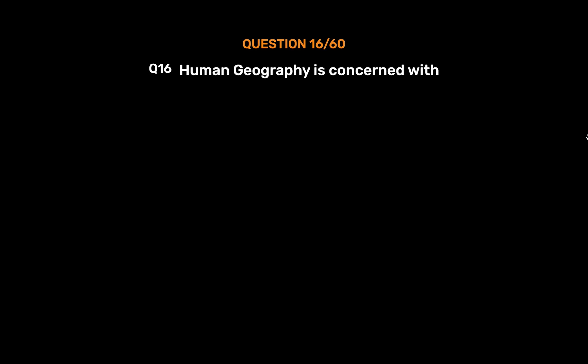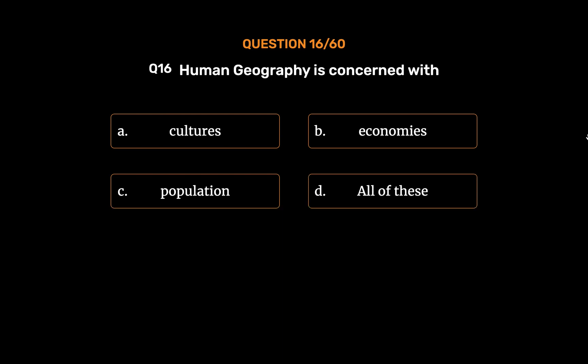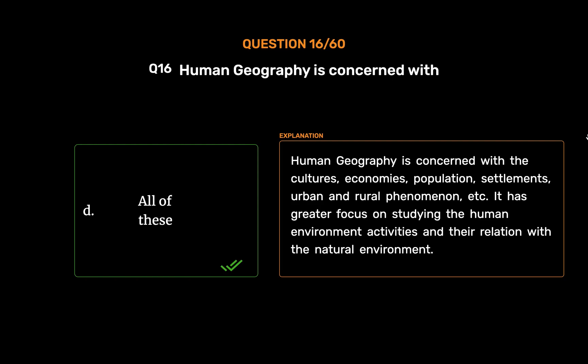Question number 16: Human geography is concerned with — option A: cultures, option B: economies, option C: population, option D: all of these. The correct answer is option D, all of these. Human geography is concerned with cultures, economies, population, settlements, urban and rural natural phenomena, etc. It has a greater focus on studying human environment activities and their relation with the natural environment.